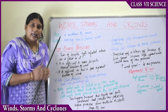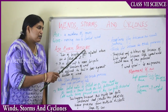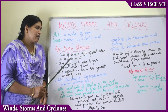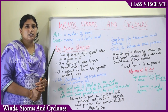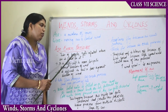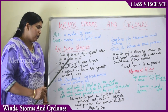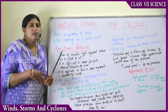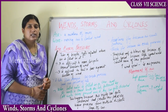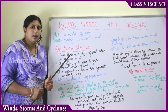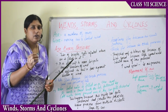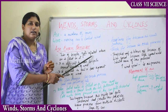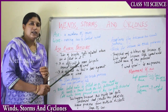Whenever air is flowing, it exerts pressure. To understand how air exerts pressure, consider a bicycle tire: the tube of a bicycle gets inflated — increased in size — when air is filled in it. When there is no air in the tire, we go to a cycle shop and get it filled, and the size of the tire increases.